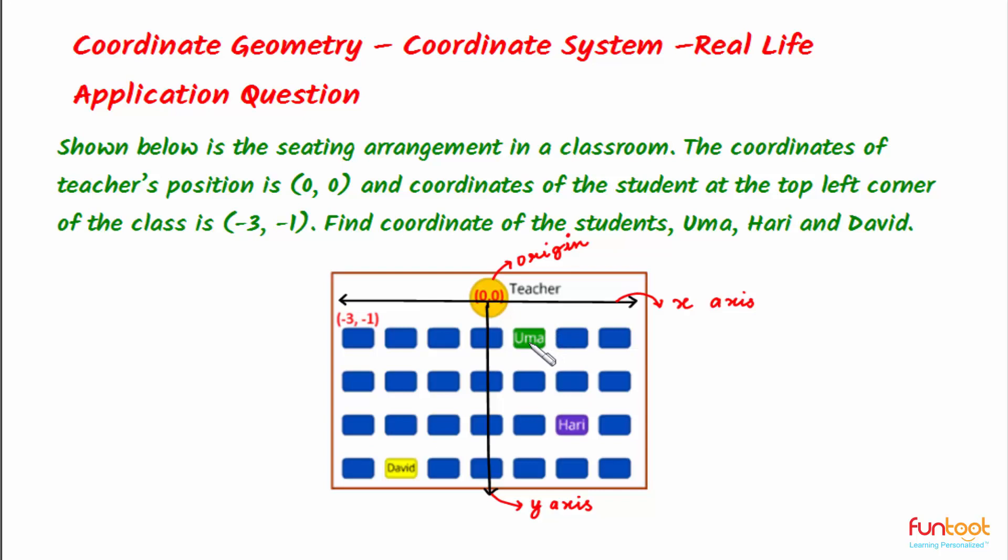Now we are in a position to write the coordinates for Uma, David, and Hari. Let's start with David. For David, the coordinates will be: it is 2 units to the left of the Y-axis, so the X-coordinate will be -2, and it is 4 units downward of the X-axis, so the Y-coordinate will be -4.